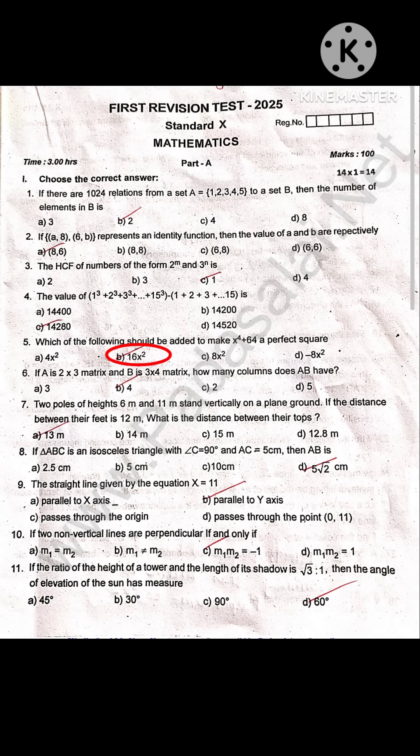If A is 2 by 3 matrix and B is 3 by 4 matrix, how many columns does AB have? 4.